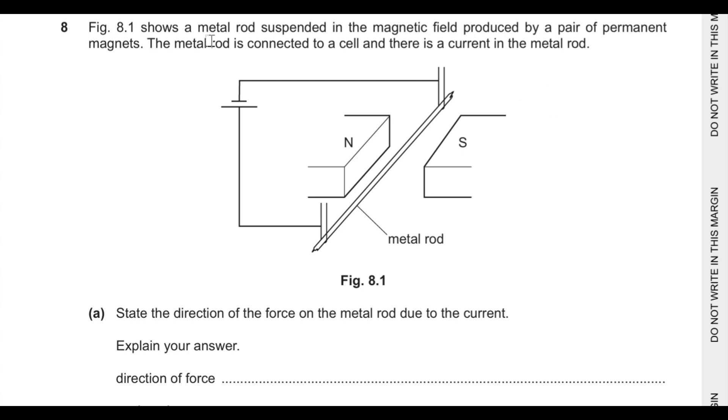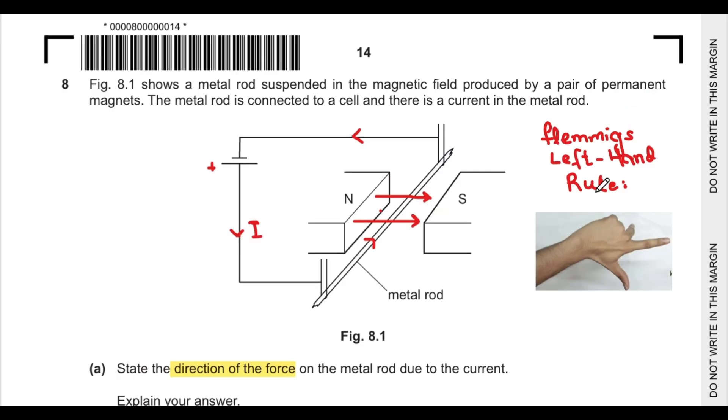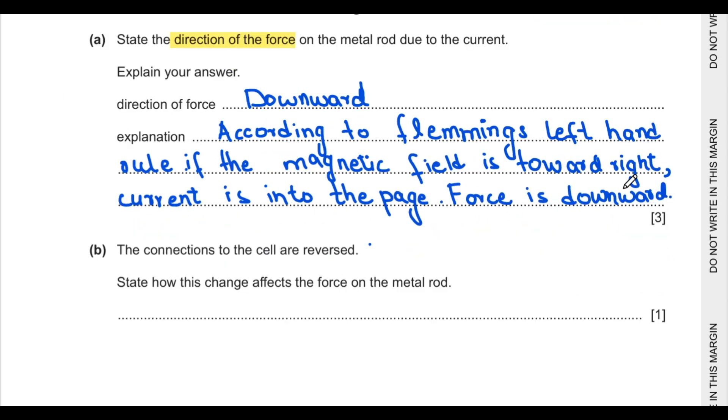Question number eight says figure 8.1 shows a metal rod suspended in a magnetic field produced by permanent magnets. The metal rod is connected to a cell and there is current in the metal rod. State the direction of force on the metal due to the current. The magnetic field is in this direction. Current flows from positive to negative. For force we'll use Fleming's left hand rule. Forefinger represents magnetic field, middle finger represents current, and thumb tells direction of force. So force is downward.